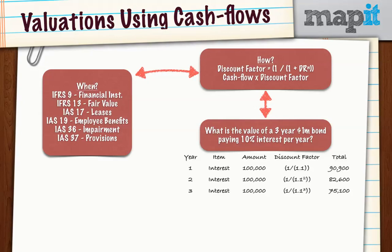The same applies for year three, to the power of 3. And then in year three, don't forget we'll also get the capital repaid on the bond. So the interest payable in each of the three years at 10% is 100,000, plus the one million capital at the end. When we discount all of that and add it up, we get a valuation of 999,600 — very close to the one million, but not quite.